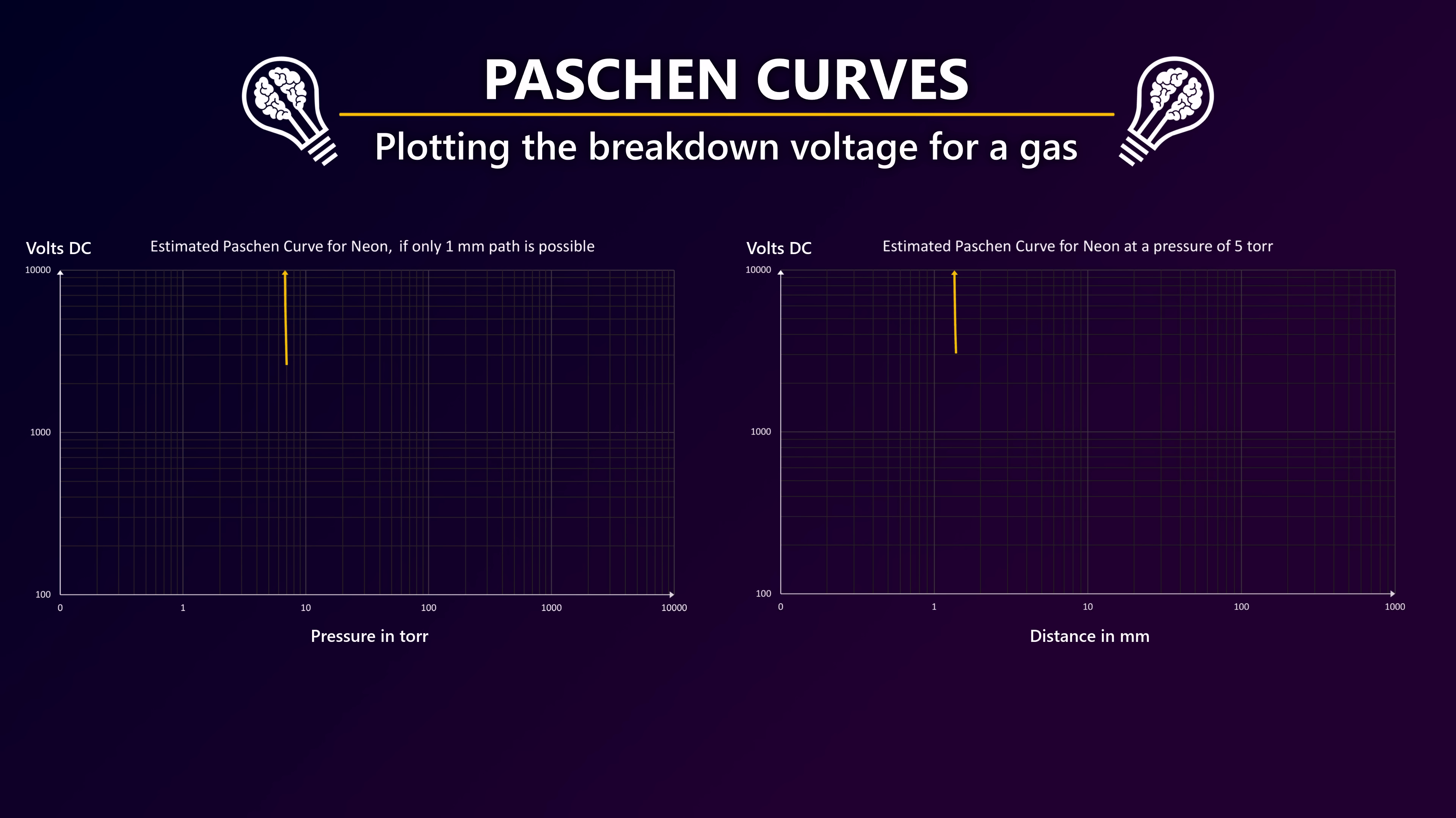If this formula is drawn as graphs, it turns out the optimal condition for the discharge is not at the lowest pressure or at the shortest distance. There is a sweet spot where the discharge can jump at the lowest possible voltage, where the gas is not too thin and the distance not too short. If I understand this correctly...